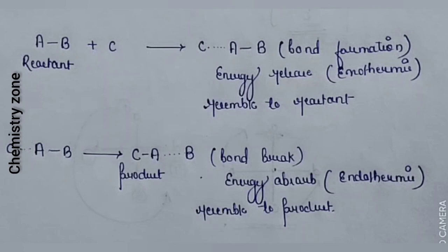To summarize: when there is an exothermic reaction, the transition state will resemble the reactant, and in an endothermic reaction, the transition state will resemble the product. This is Hammond's Postulate.